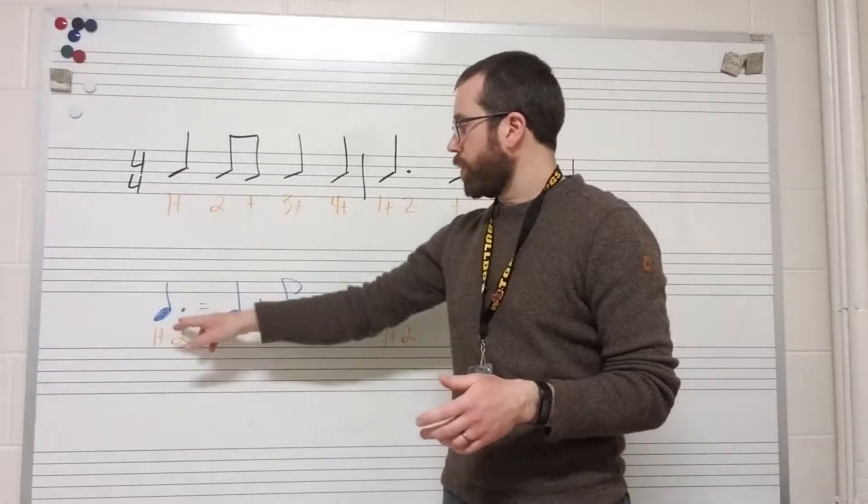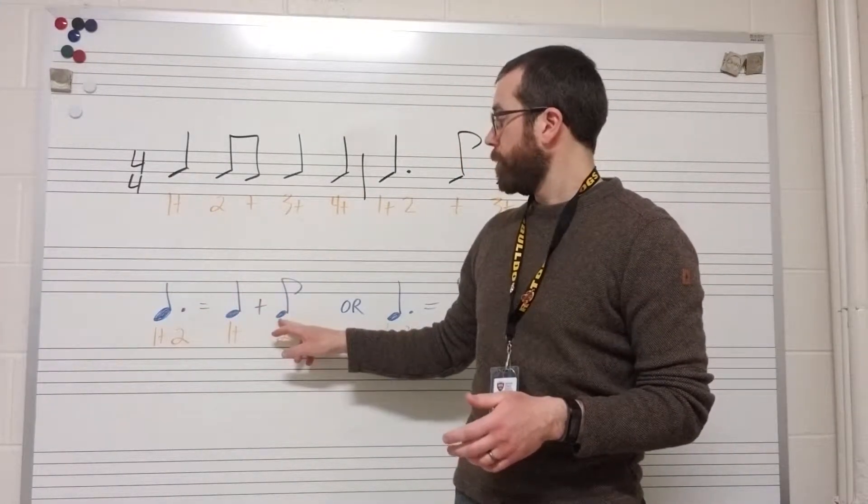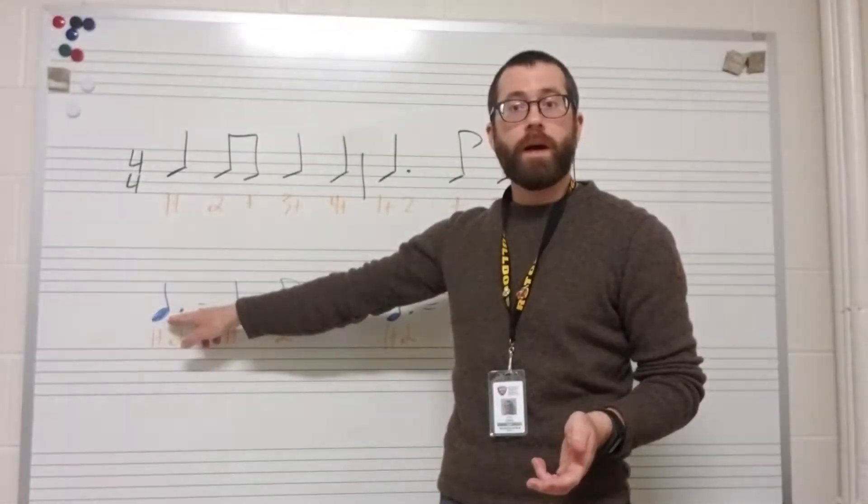Okay, so what does that mean? So if you have a quarter note and you add half of its note value, half of a quarter note is an eighth note, you get a dotted quarter note.